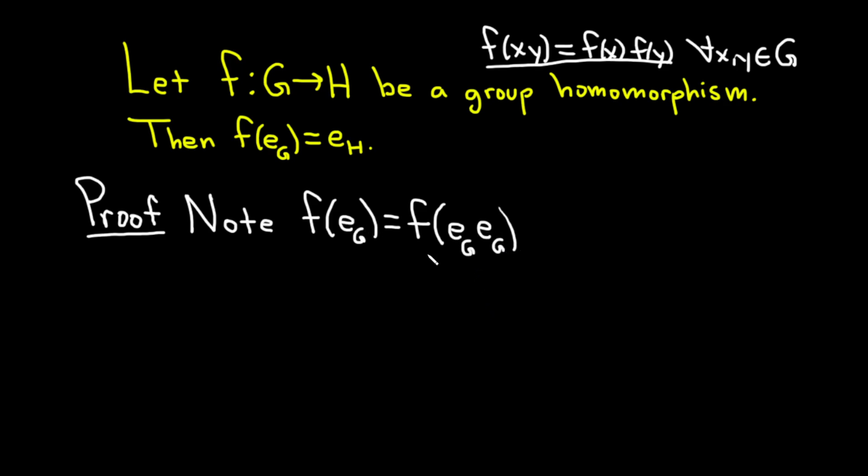Because e times e is e, because e is the identity. So I'm going to say, I'll write it over here, because e_G is the identity, let's put id in G. That's why that equation is true.